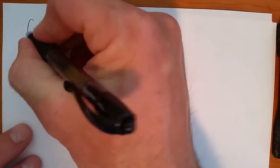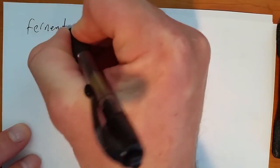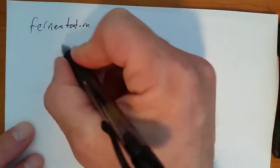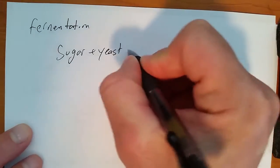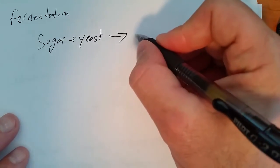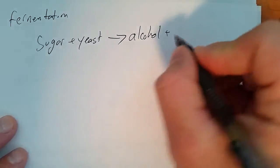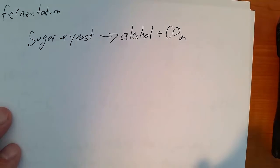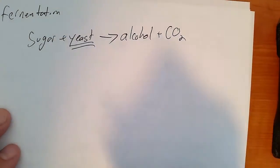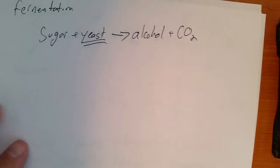A couple more reactions and we're done. Fermentation. Sugar plus yeast is going to make alcohol and CO2. Okay. The key part there is the yeast doing the fermentation.